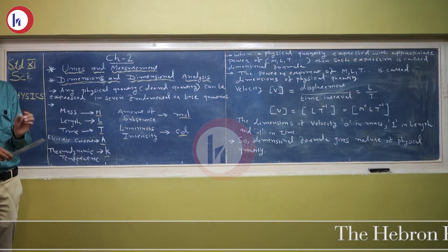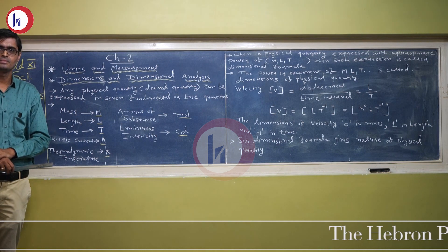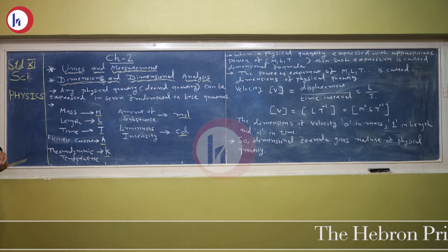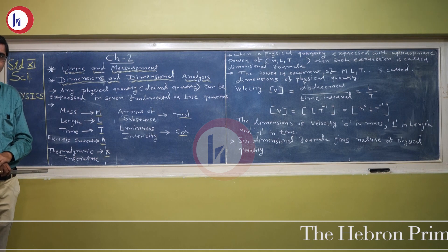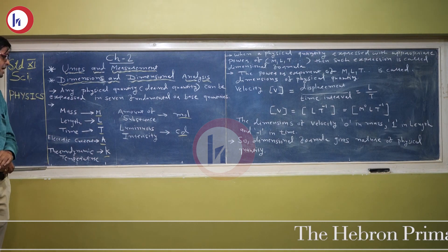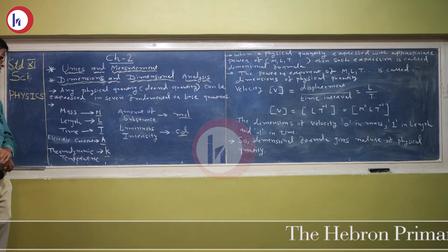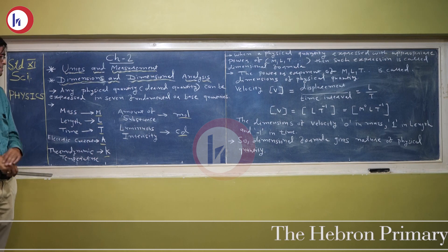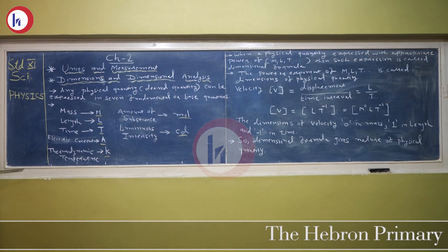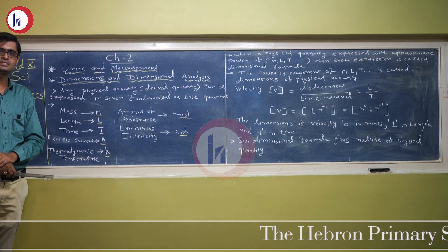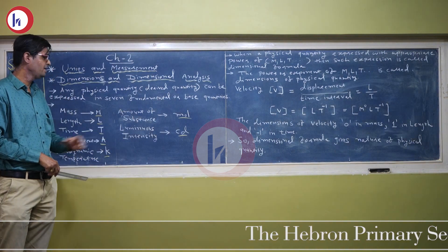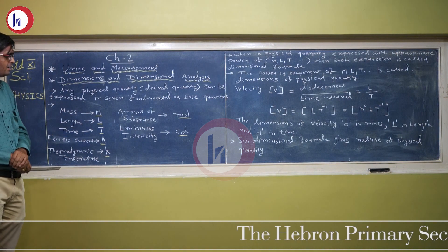These quantities are written in abbreviated form. Mass is written as capital M, length as capital L, time as capital T. The electric current is written from the scientist's name Ampere — capital A. Thermodynamic temperature is written as capital K, the amount of substance is mol, and the luminous intensity is written as candela, CD.